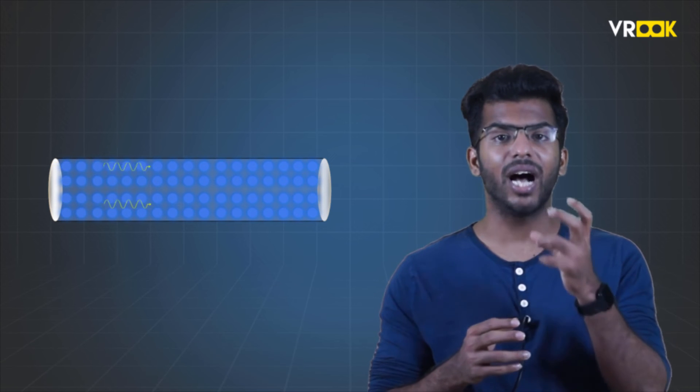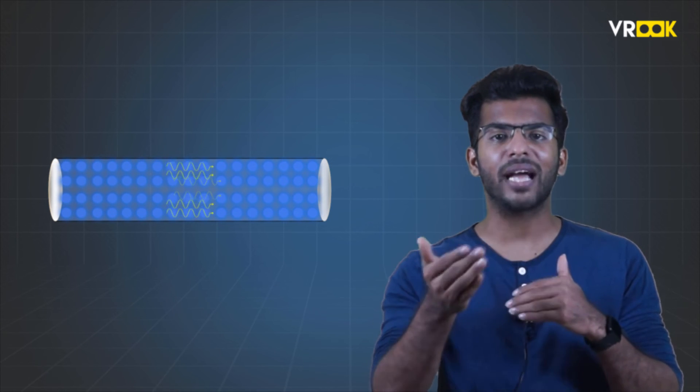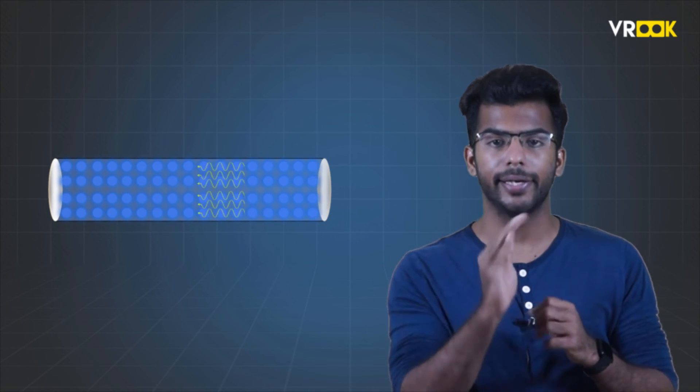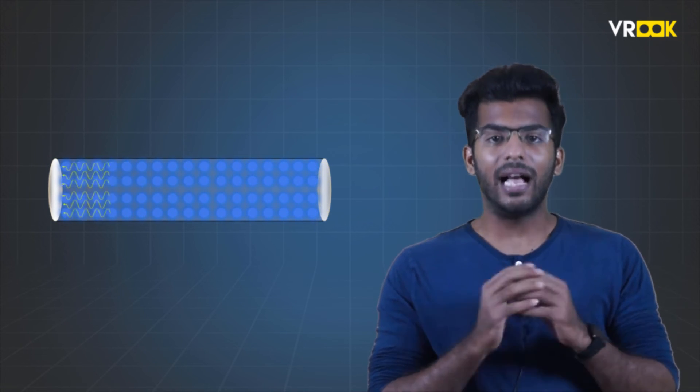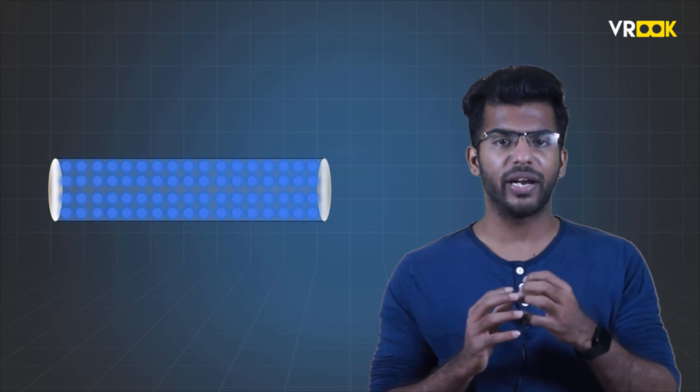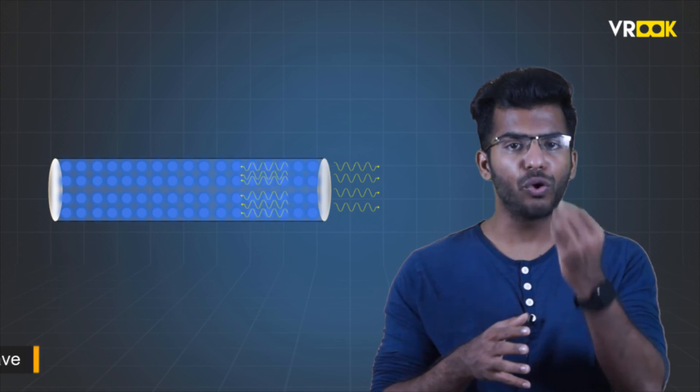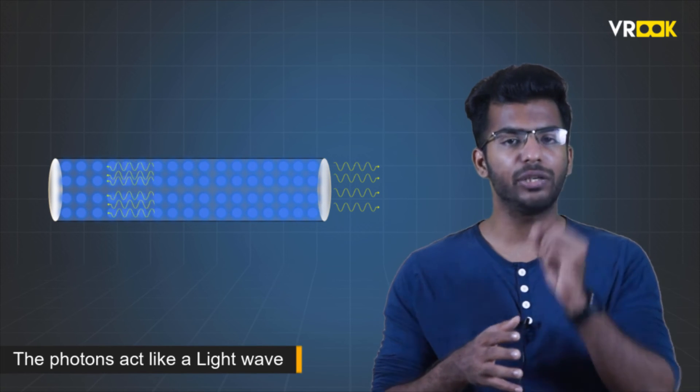So we get a large number of photons traveling back and forth in the laser cavity. This is highly directional and coherent light. As the mirror on the right is partially reflective, the laser light comes out. Inside the cavity, the photons act like a light wave.